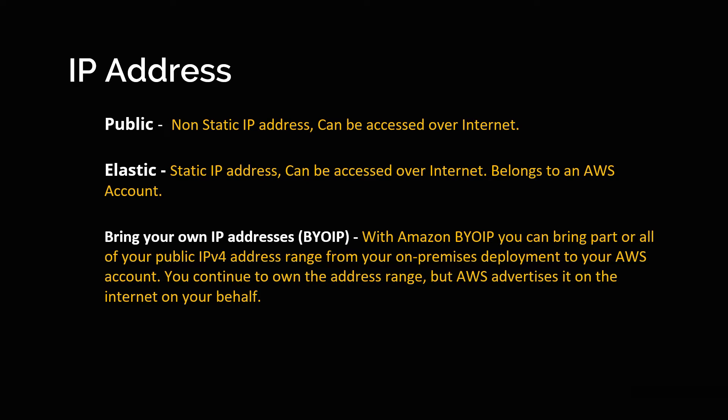The problem here is when you assign a public IP address to an instance and give that IP address to customers, if tomorrow you have to turn off the EC2 instance for some patching and then bring it back up, the IP address will change. For that reason, we have something called elastic IP addresses.